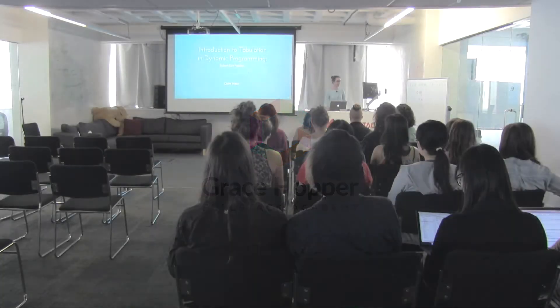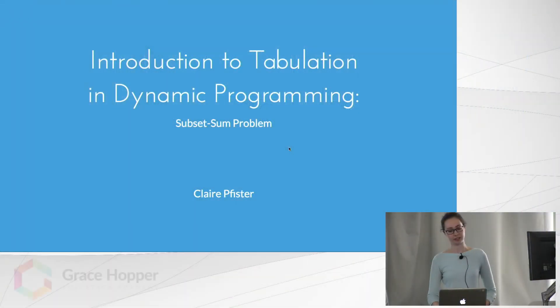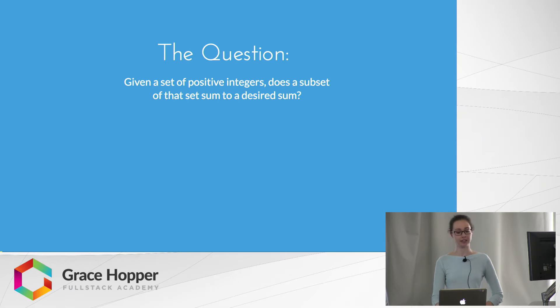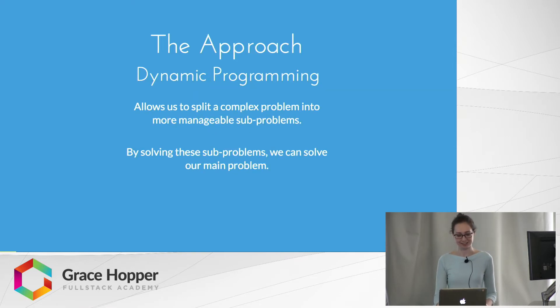Hi, my name is Claire Pfister, and I'm doing my tech talk on an introduction to tabulation dynamic programming through the subset sum problem. The question we're trying to answer is: given a set of positive integers, does a subset of that set sum to a desired sum? For example, in the set {1, 2, 9, 17, 22}, is there a subset that sums to 26? As you can see just by looking at it, the answer is yes, because 9 and 17 add to 26.